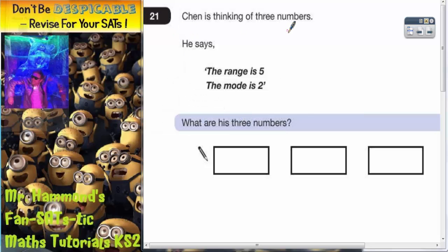Question 21. Chen is thinking of three numbers. He says, the range is five and the mode is two. What are his three numbers?